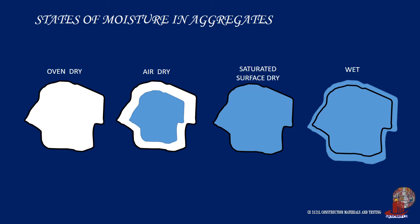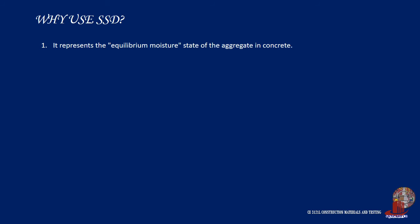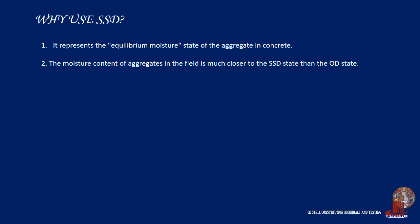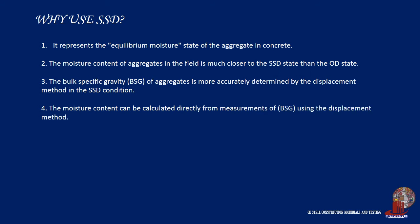Of these four states, only OD and SSD states correspond to specific moisture contents, and either of these states can be used as reference states for calculating moisture contents. The AD and wet states represent the variable moisture contents that will exist in stockpiled aggregates. The SSD state is the best choice as the reference state for the following reasons: first, it represents the equilibrium moisture state of the aggregate in concrete, meaning the aggregate will neither absorb water nor give up water to the paste. Next, the moisture content of aggregates in the field is much closer to the SSD state than the OD state. The bulk specific gravity (BSG) of aggregates is more accurately determined by the displacement method in the SSD condition. And lastly, the moisture content can be calculated directly from measurements of BSG using the displacement method.